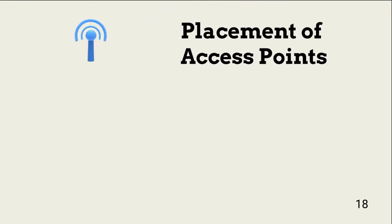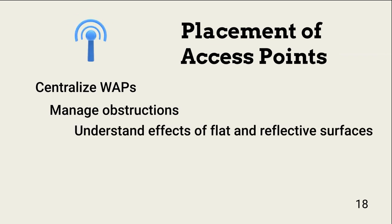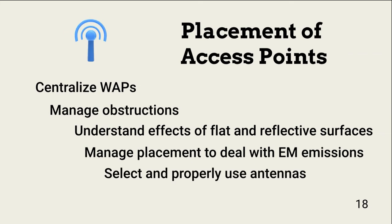After the survey, we need to determine where to place access points. According to the 2020 CISSP Common Body of Knowledge, general considerations include: centralize access points in needed coverage areas; understand and avoid or manage physical obstructions that limit signal strength; remember that reflective and flat surfaces can seriously attenuate signals; manage placement to avoid interference from equipment that emits electromagnetic fields; position external omnidirectional antennas vertically; and properly direct directional antennas.